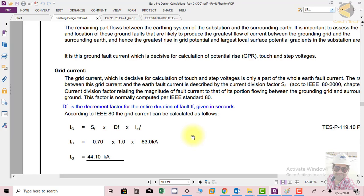SF is the ratio that determines, if there is a fault, how much current will flow through the grid and how much will flow to nearby points like gantries or other substations. This means 70 percent of the total fault current is flowing through this mesh and the remaining flows to other parts.